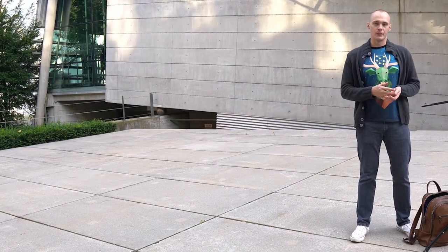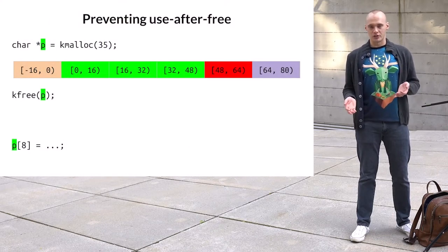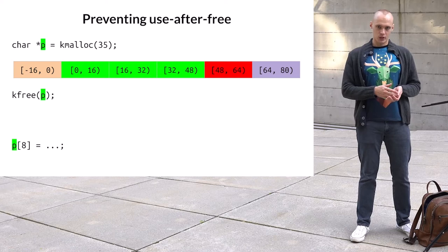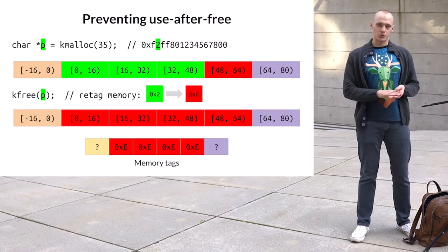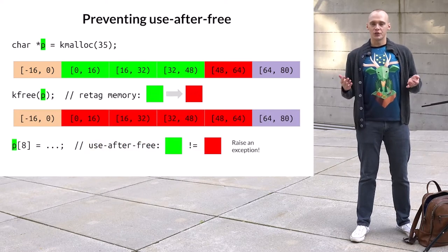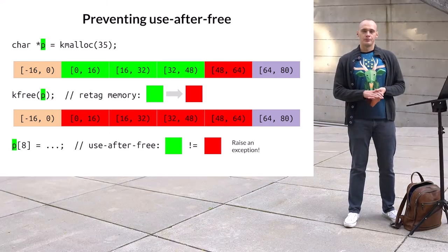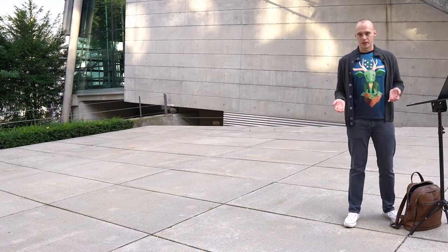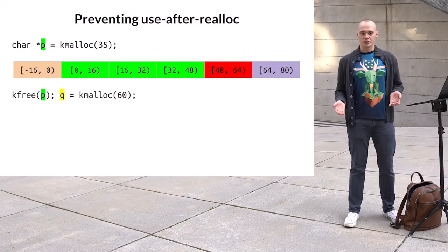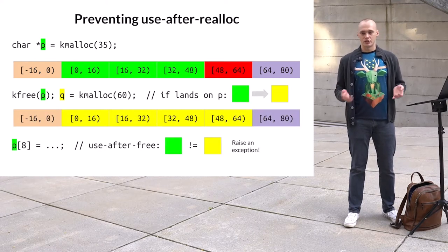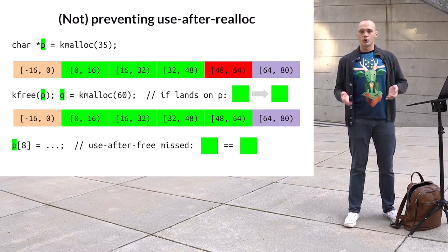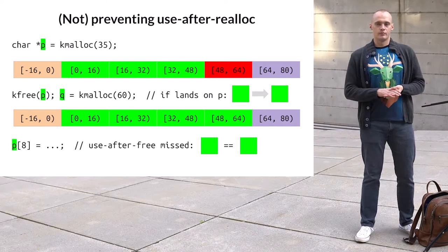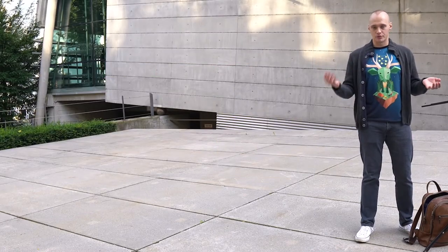Now let's look at what happens with use-after-frees. Let's assume the kernel freed an object via kfree and then accessed it. With MTE enabled, on kfree the allocator retags the object using the invalid tag — the whole kmalloc object will now be marked as inaccessible. If the kernel accesses it, MTE will detect a tag mismatch. However, there is another scenario: if the kernel reallocated the freed object in another context, the object gets marked with another random tag. This new tag could happen to match the tag from the first allocation, so there is a chance — about 6% — that in-kernel MTE will fail to detect use-after-frees on reallocated objects.